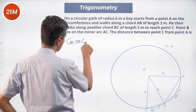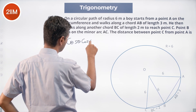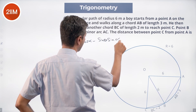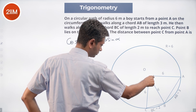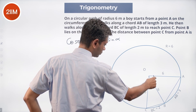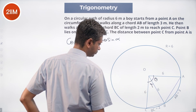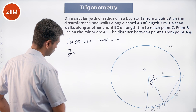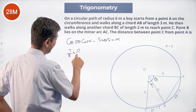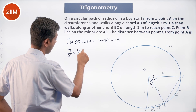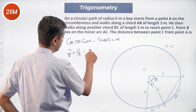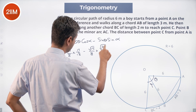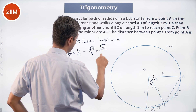Now we want to find cos(θ + α). Using the compound angle formula: cos(θ + α) = cos θ · cos α − sin θ · sin α. That is (7/8)(17/18) − (√15/8)(√35/18).